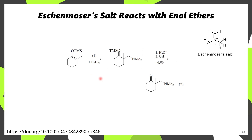One application is reacting Eschenmoser's salt with a TMS enol ether, enabling dimethylaminomethylation at the alpha position. By using a TMS enol ether over a regular ketone, it's possible to select which position will react with the iminium. If you were to react the corresponding ketone in the presence of an acid with Eschenmoser's salt, you'd get enolization at both positions and obtain a mixture of products. By preparing the desired TMS enol ether geometry, you get reactivity at the desired position.